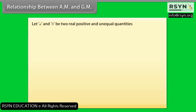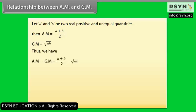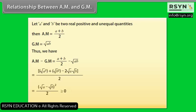Relationship between AM and GM: Let A and B be two real positive and unequal quantities. Arithmetic mean = (A+B)/2, geometric mean = √(AB). Then AM − GM = (A+B)/2 − √(AB). On solving, it is found that this difference is greater than or equal to 0, hence AM ≥ GM, i.e., A ≥ G.